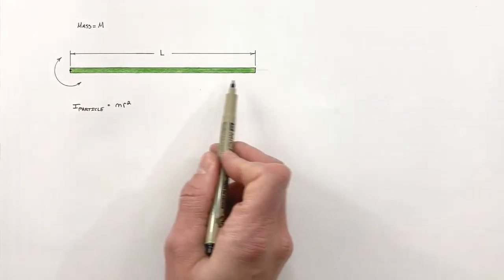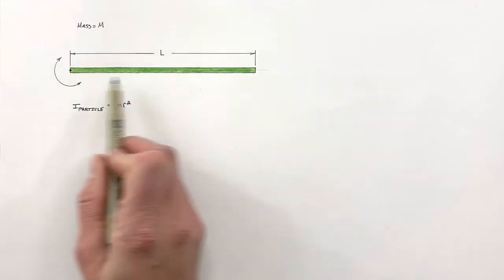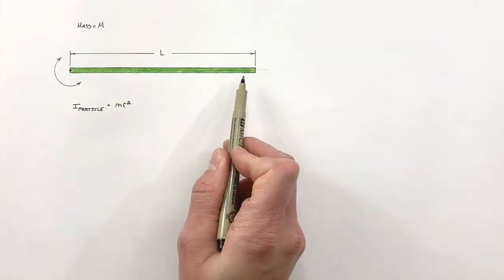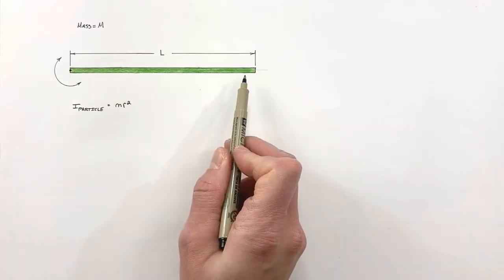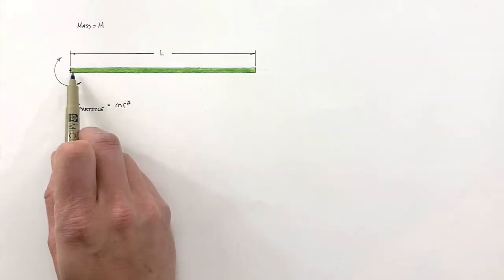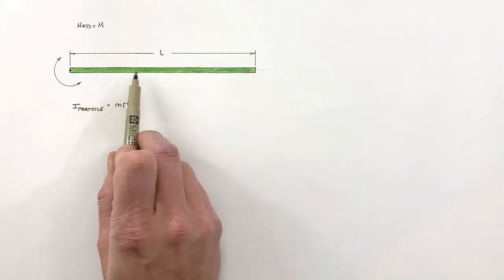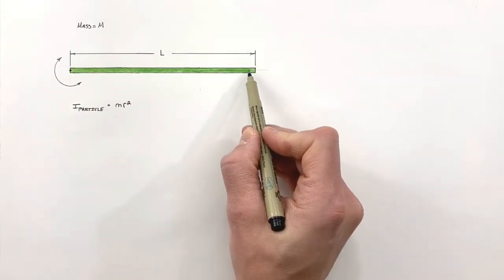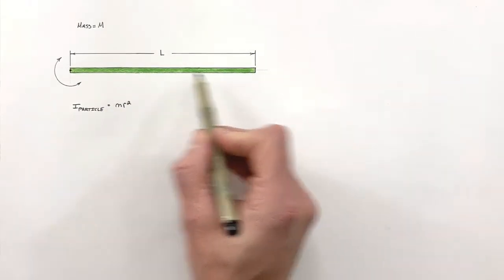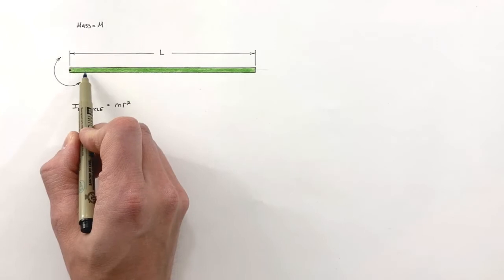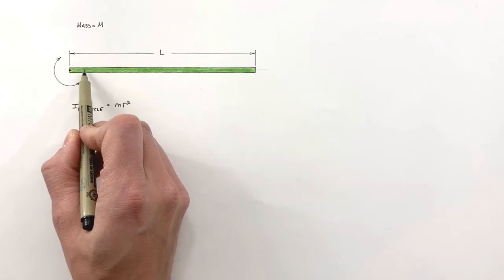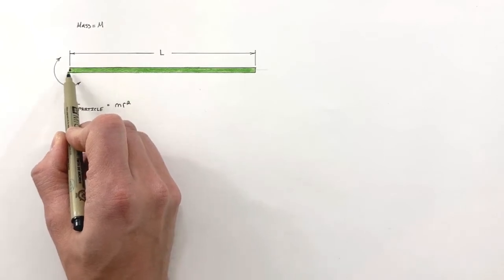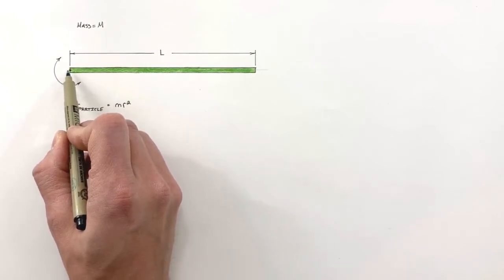The issue when we're dealing with a long thin rod like this is that there are lots of different particles at lots of different radii. A little particle out here on the end of this rod has a much greater radius than a particle over here on this rod, because it's much closer to the pivot point.